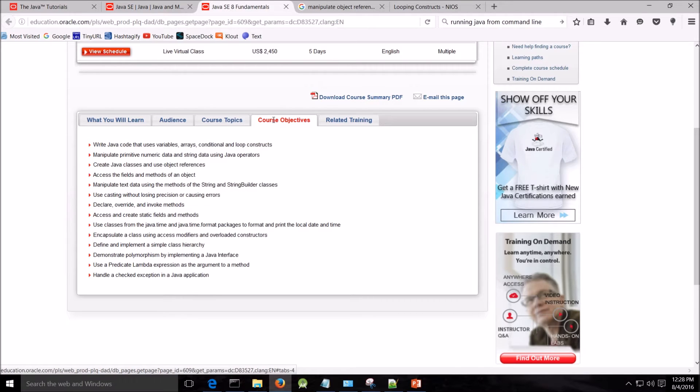You'll be able to use variables, arrays, conditional and loop constructs, manipulate primitive numeric data, Java classes, manipulate text data using the methods of string and string builder classes, use casting without losing precision or causing errors, declare and invoke methods. A whole list of objectives are set forth in this course, all of them based upon the Oracle University objectives.